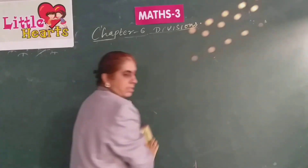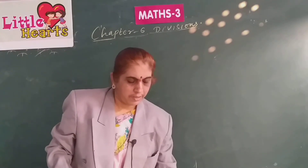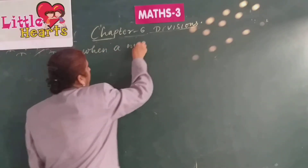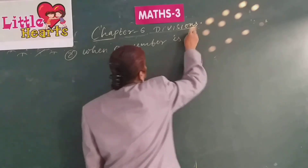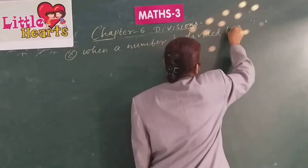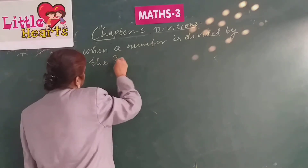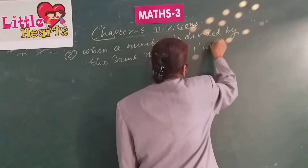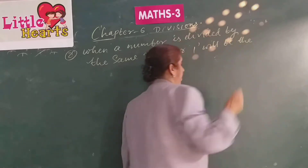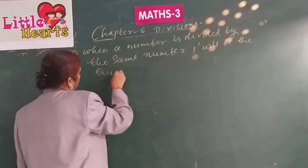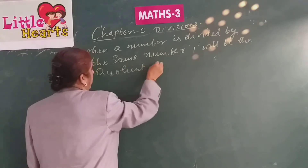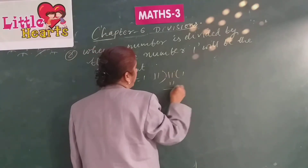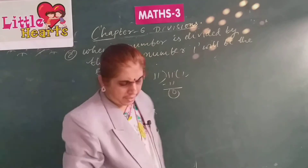Second property: when a number is divided by itself, 1 will be the coefficient. For example, 11 divided by 11 — 11 ones are 11 — so 1 will be the coefficient.